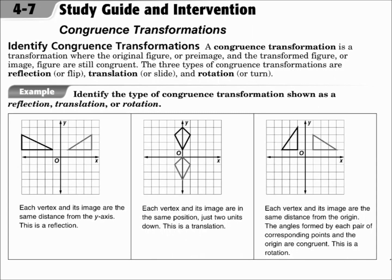This is lesson 4.7: Congruence Transformations. Your objectives are to identify congruence transformations and to verify congruence transformations. Whenever a shape or figure flips, slides, or turns, it's called a transformation. Since the size and shape do not change in those cases, it's called a congruence transformation. If it flips over, it's called a reflection. If it just slides, it's called a translation. And if it turns around, it's a rotation.